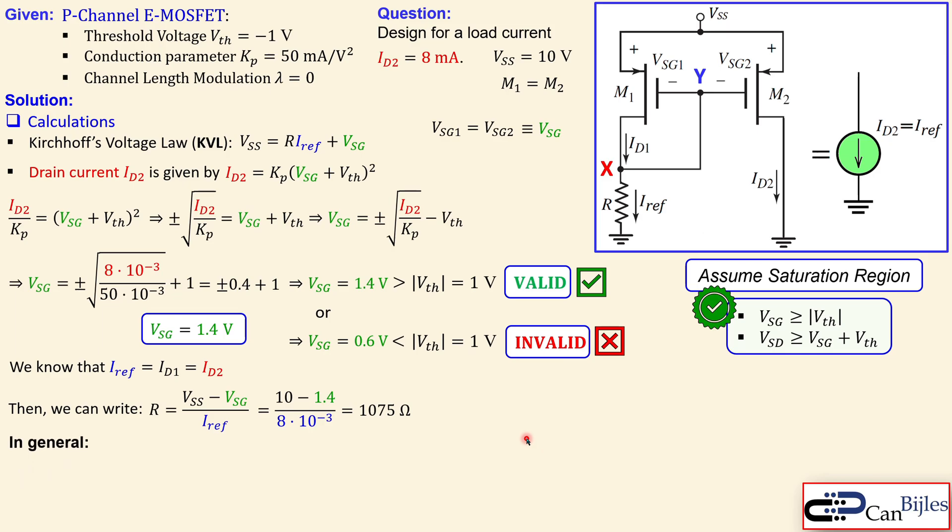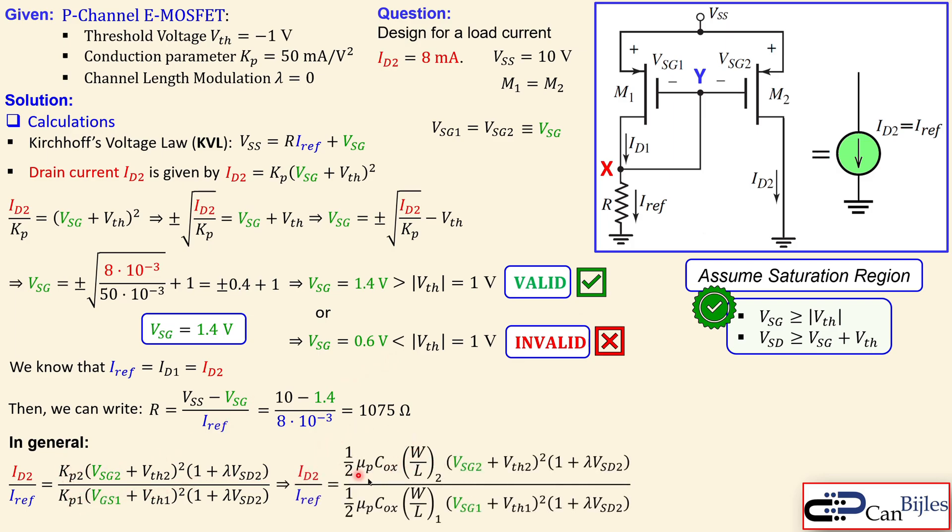In general, we need to scale up or down our currents from left to right. For that, I'll discuss the general expression. We relate ID2, the load current, to the reference current using the complete drain current expression including lambda. This is the complete expression, though lambda could be some other value besides zero.